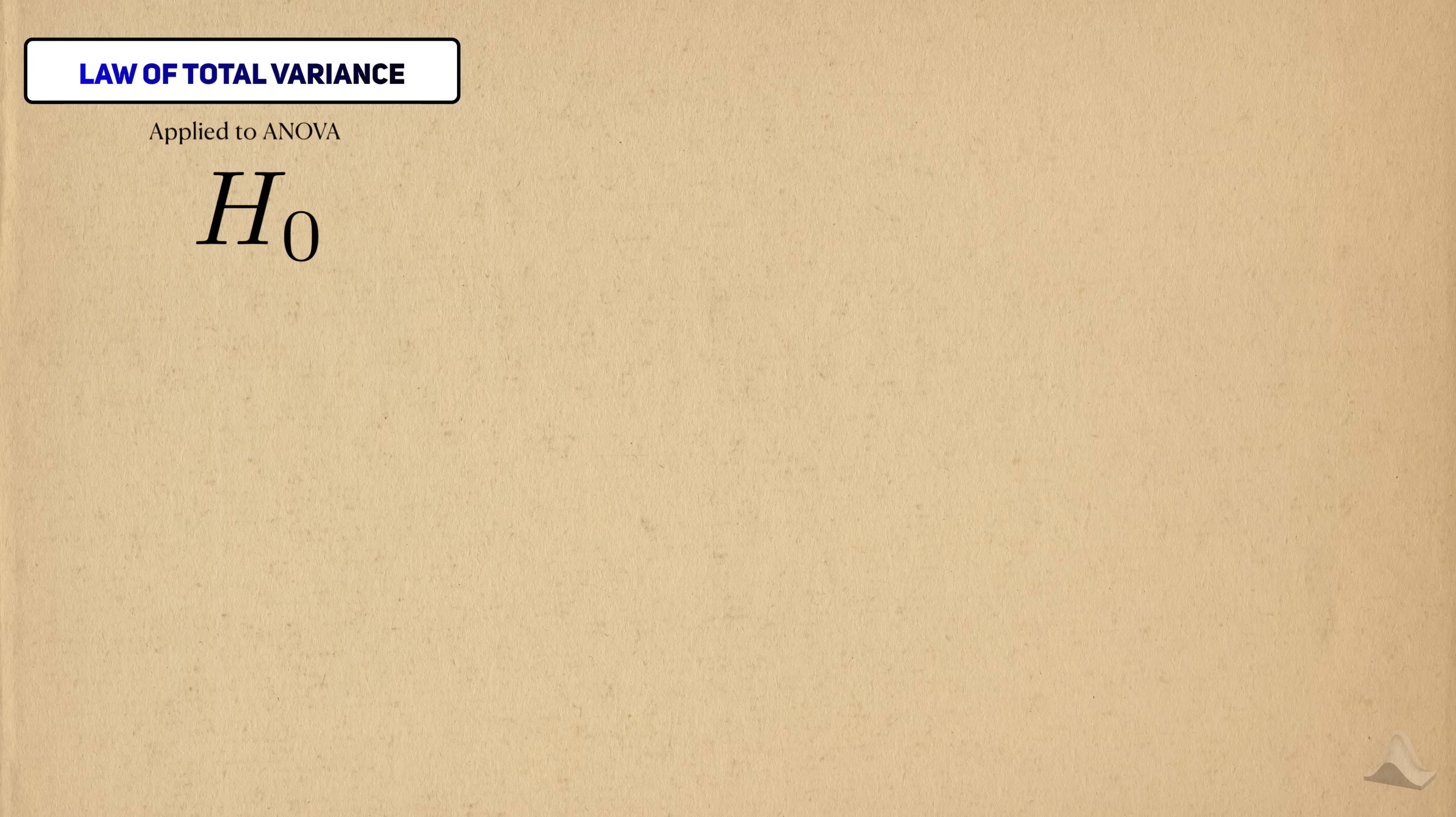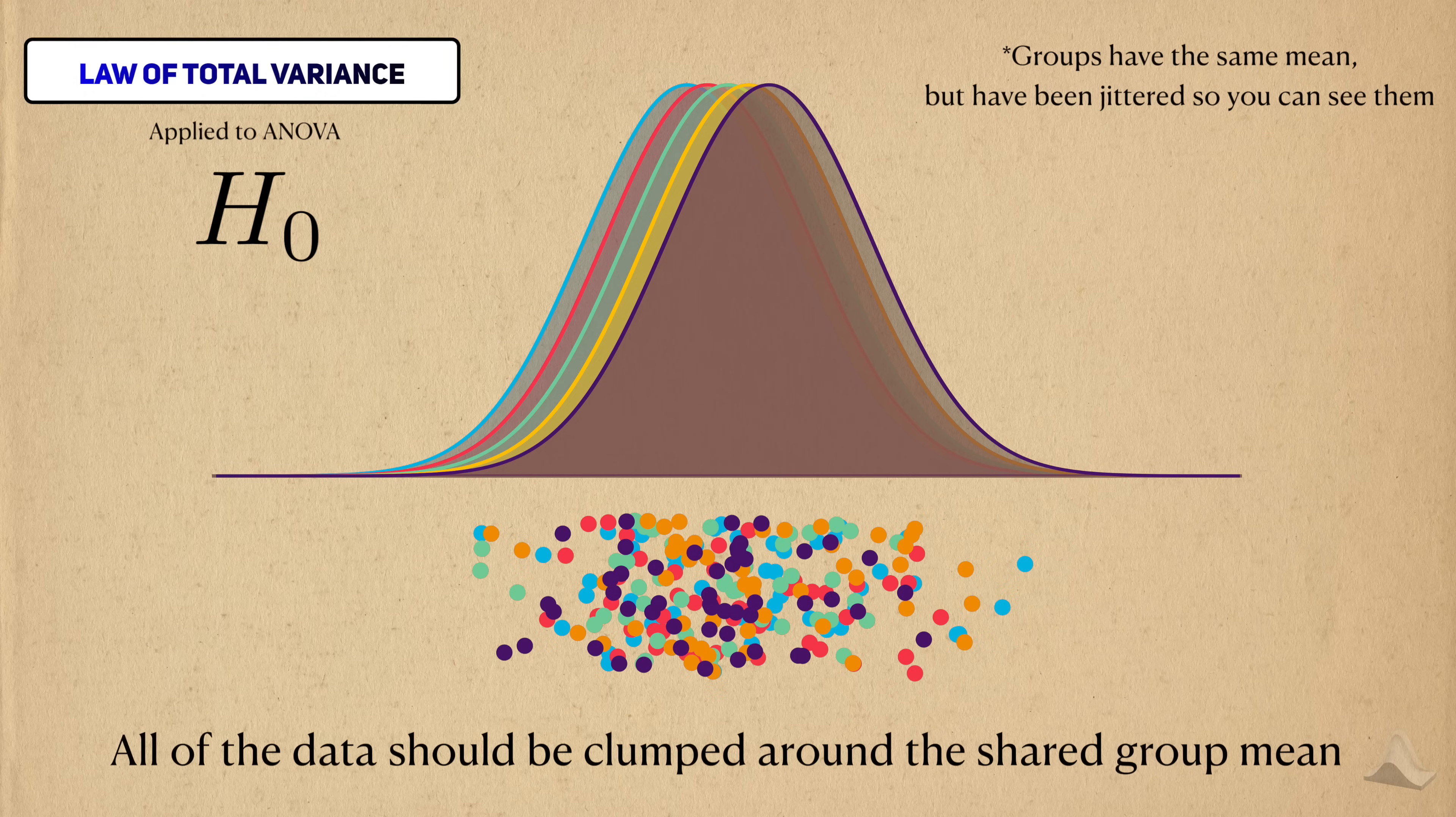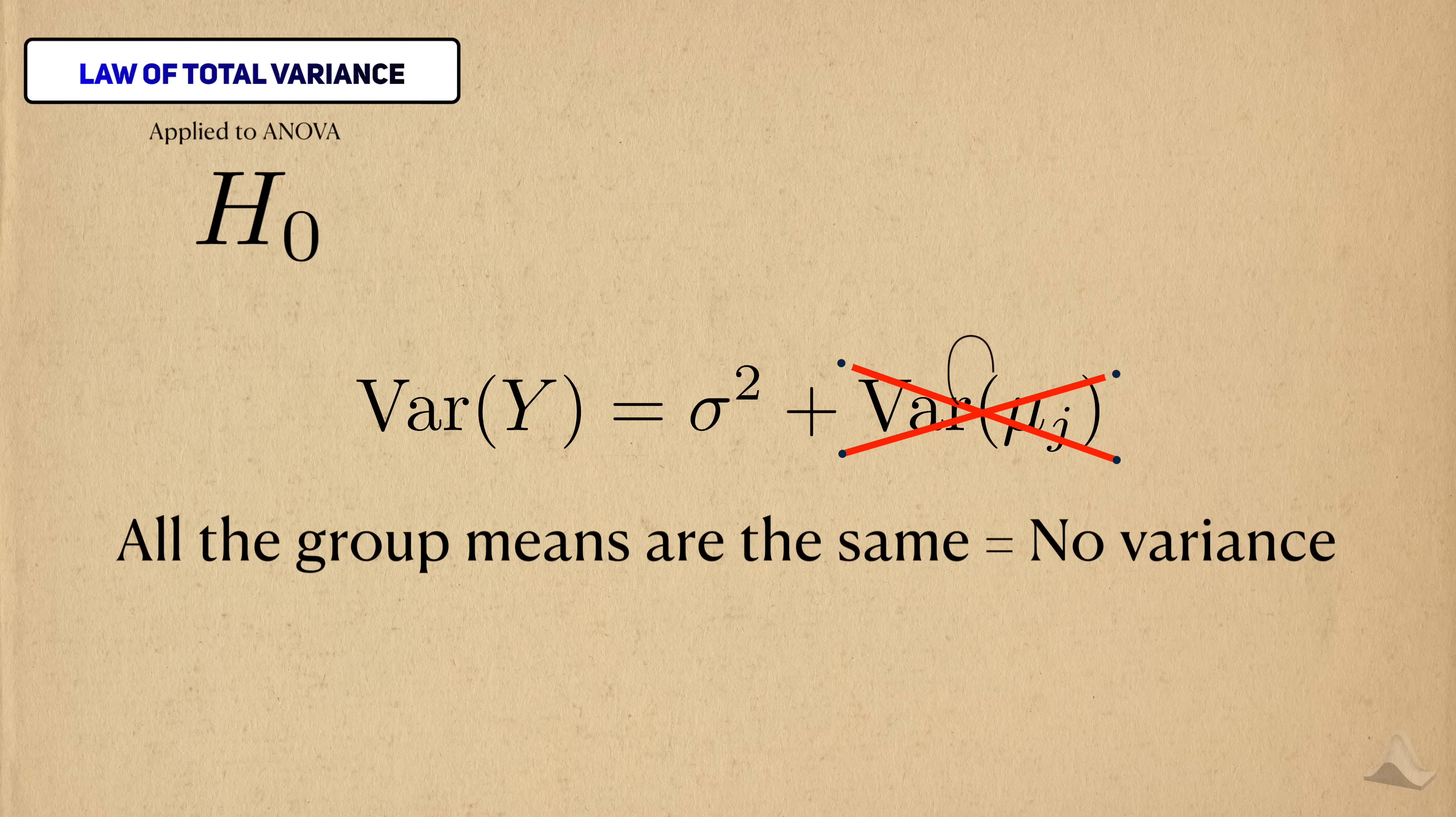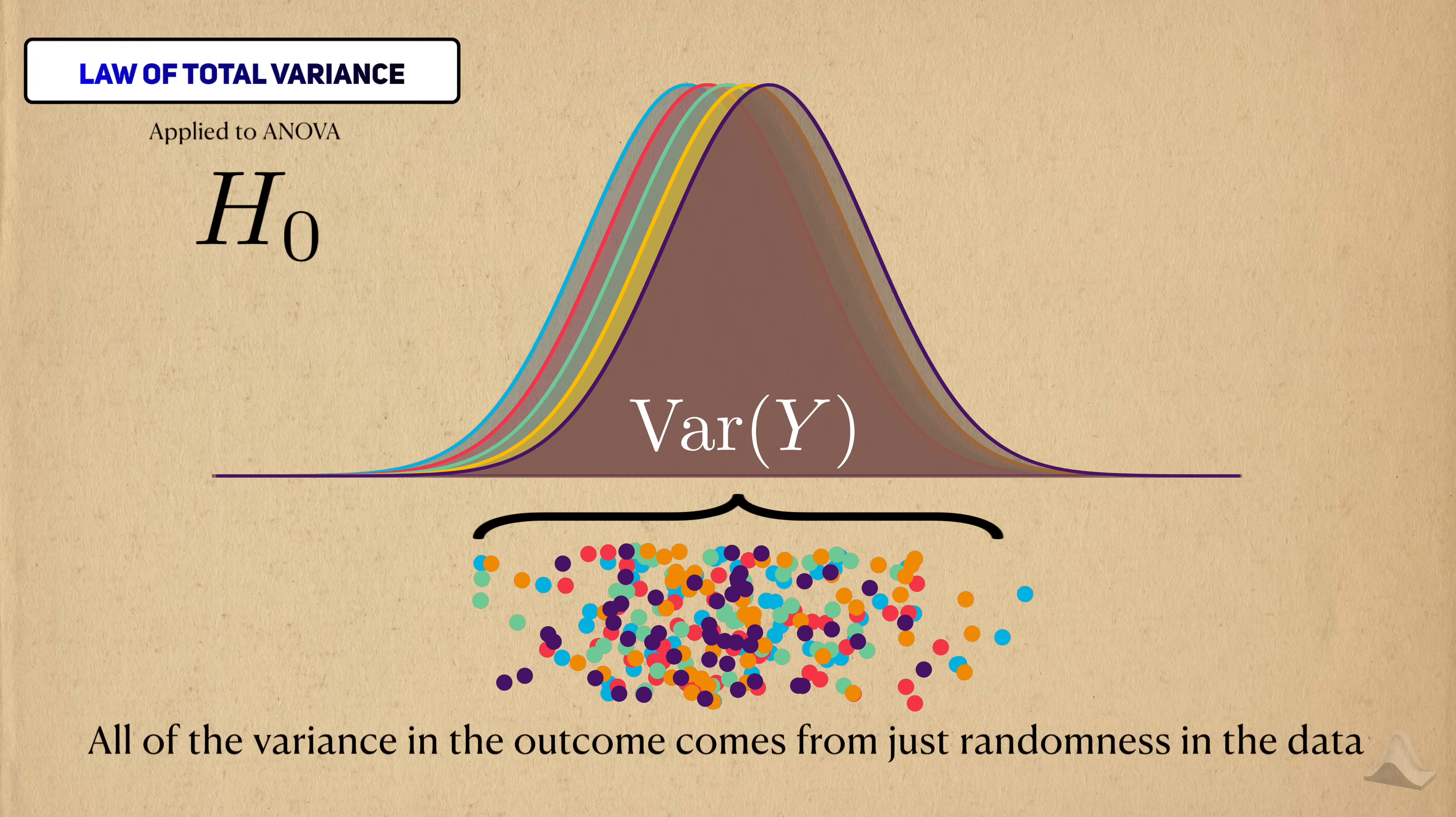Let's say that the null hypothesis is true. Then, all of the group means will be the same thing. We would expect to see that all of the data be clustered around this single mean. But if all of the group means are the same, then there's no variance between them. Because of this, this second term is zero when the null hypothesis is true, and what we're left with is just sigma squared. Another way to think about this is that all of the variances in the outcome just come from the randomness in the data.